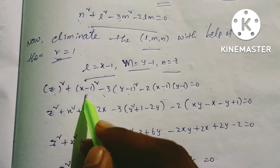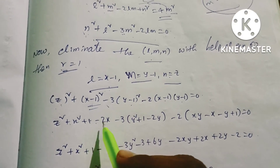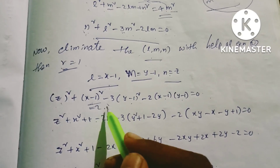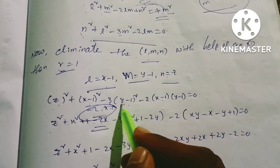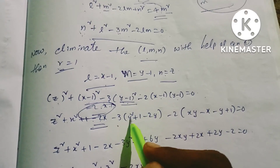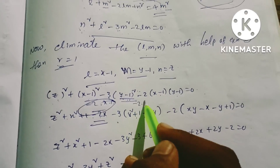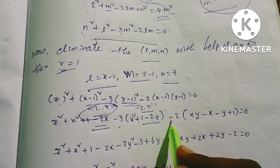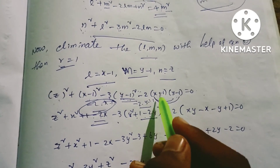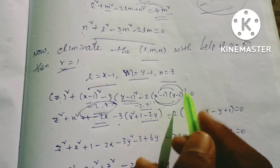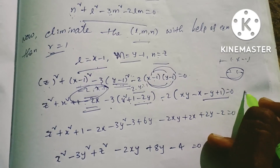Expanding (x-1)²: x² + 1 - 2x. Expanding -3(y-1)²: -3y² - 3 + 6y. Expanding -2(x-1)(y-1): -2xy + 2x + 2y - 2. Combining all terms: z² + x² + 1 - 2x - 3y² - 3 + 6y - 2xy + 2x + 2y - 2 = 0.